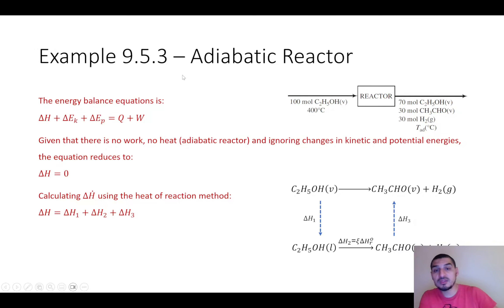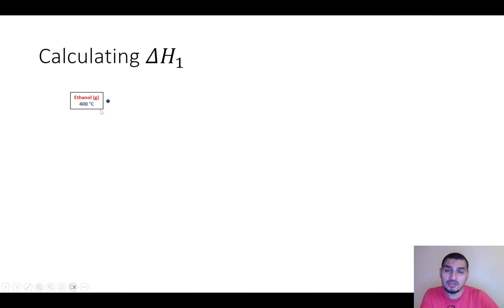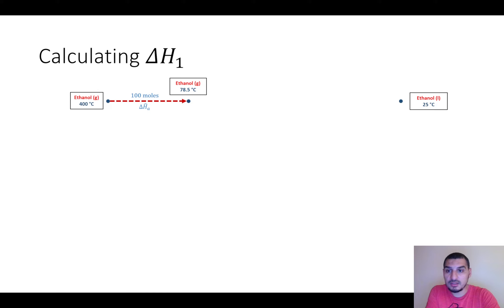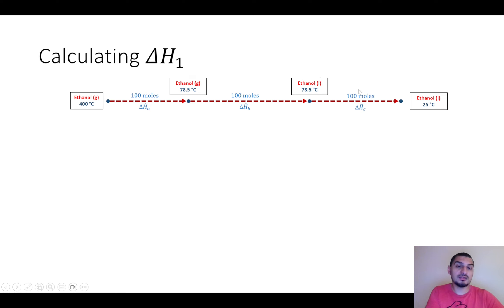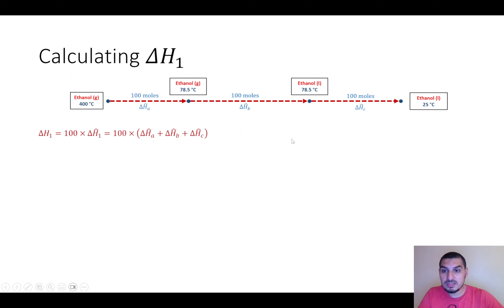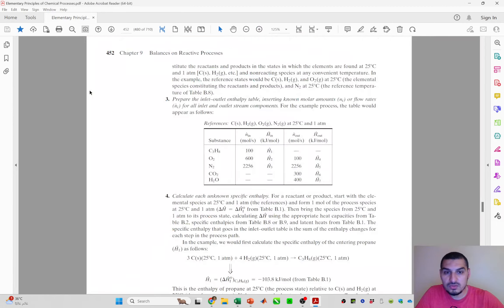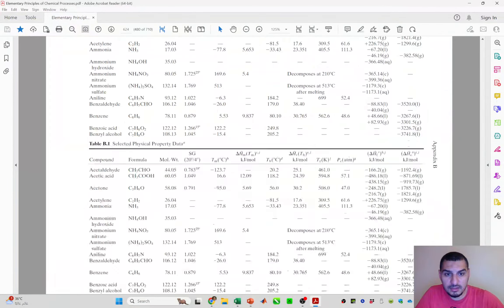For delta H1, we have pure ethanol in the feed at 400°C vapor, and we want to convert this to ethanol liquid at 25°C. The path goes: cool vapor from 400°C to saturated vapor at 78.5°C, then condense to liquid at 78.5°C gaining latent heat, then cool liquid from 78.5°C down to 25°C. We calculate each sub-step contribution to delta H1.